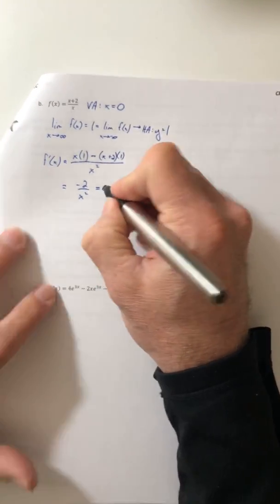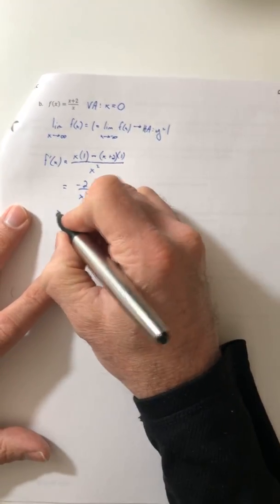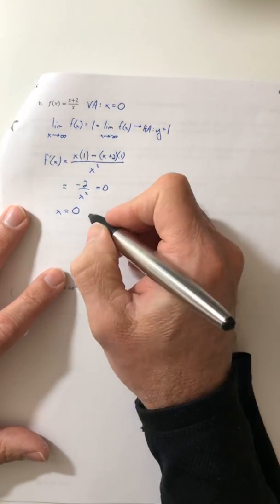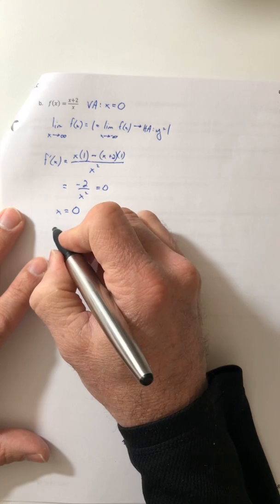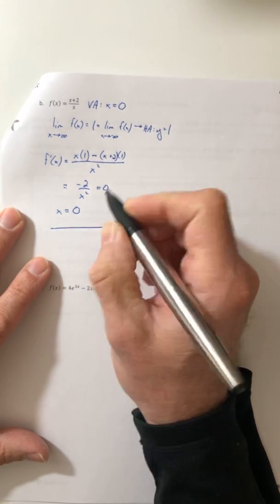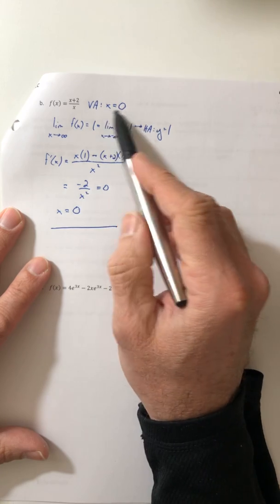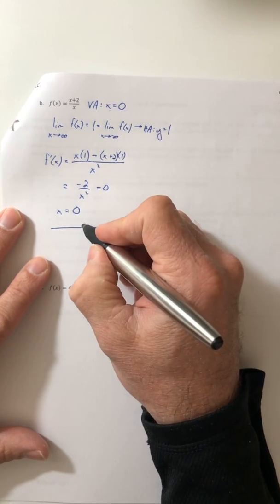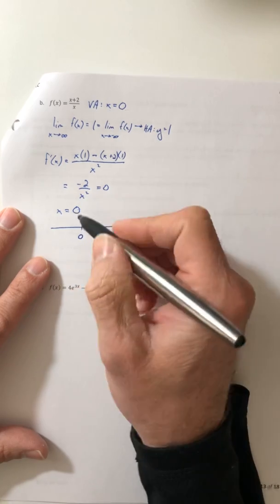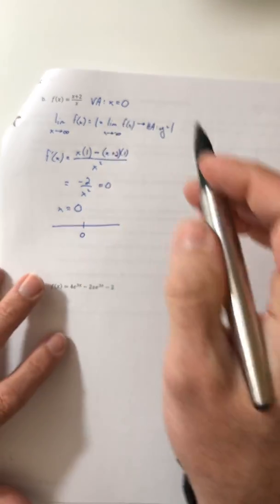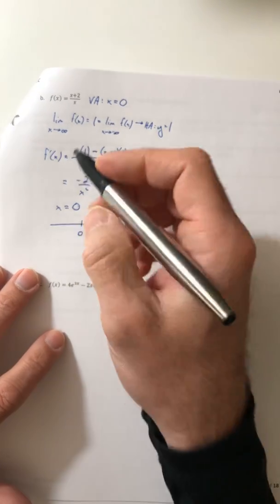So we can set that to zero to get your critical number. So x is equal to zero. Which we know is not going to give us a relative max or relative min because it's not even part of the domain. But it's still possibly going to tell us where the function increases and decreases, or at least where it could switch.